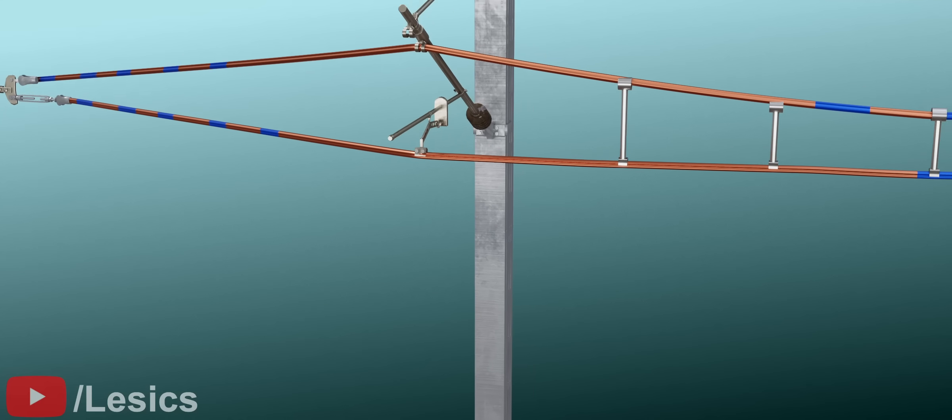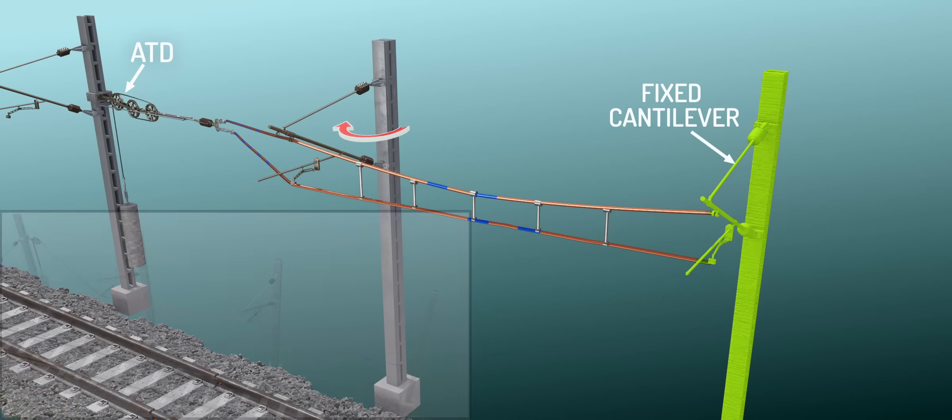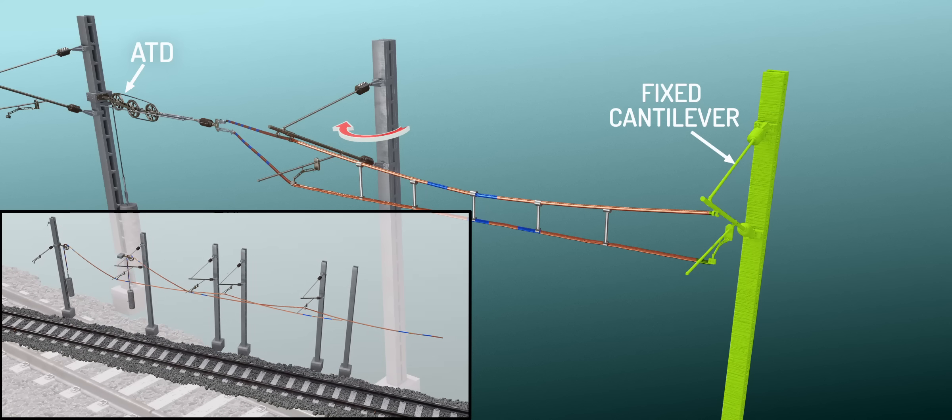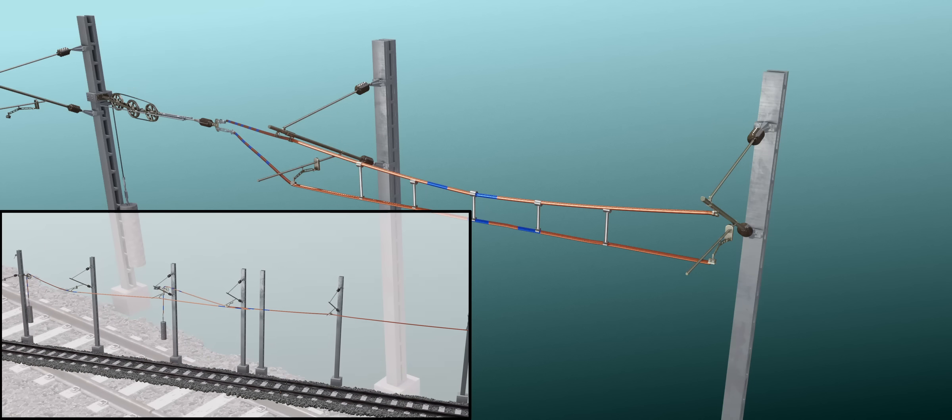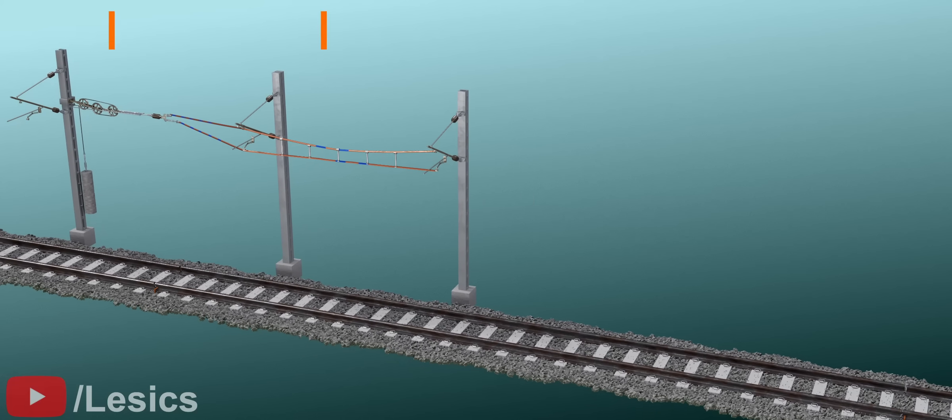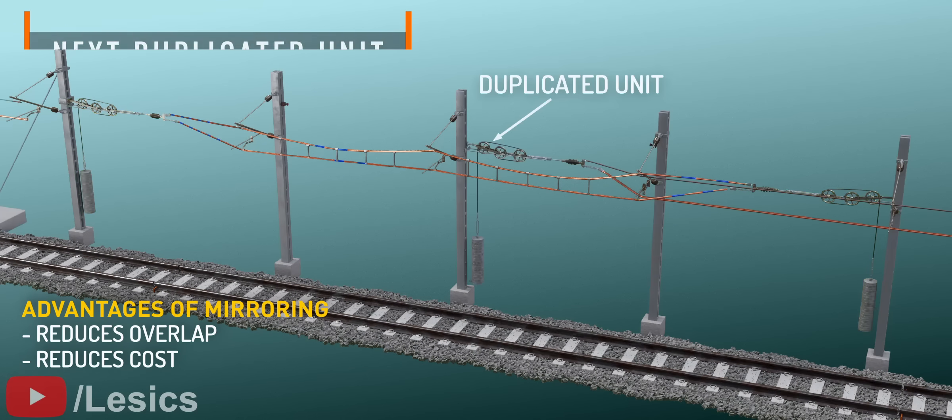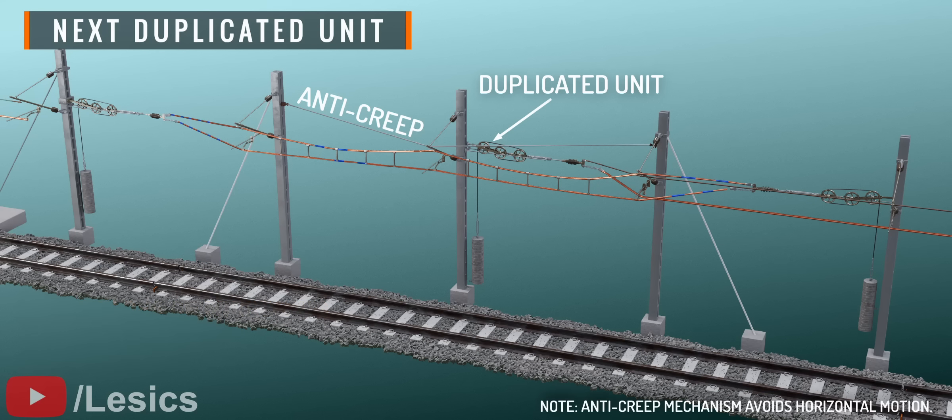Till now, we have seen that the ATD is attached at one end and the other end is fixed. We saw earlier how to duplicate this simple unit to achieve a long OHE. However, before duplicating, if you mirror this simple design, the whole design will be much simpler. This is the final OHE design.